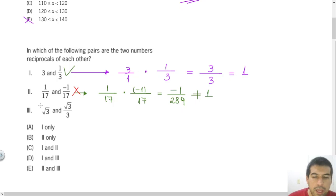Lastly, we need to check if square root of 3 and square root of 3 over 3 are reciprocals or not. At first glance, they don't look like reciprocals, but actually they are. If you consider square root of 3 and multiply by square root of 3 over 3.